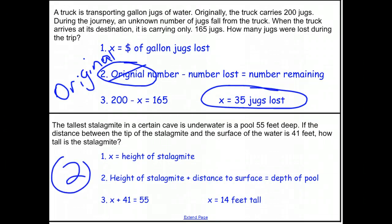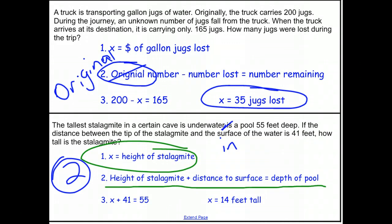For number two, the tallest stalagmite in a certain cave is underwater in a pool 55 feet deep. If the distance between the tip of the stalagmite and the surface of the water is 41 feet, how tall is the stalagmite? Well, we know then in that case that the height of the stalagmite is the unknown. We know that the height of that stalagmite plus the distance to the surface has got to be equal to the depth of the pool, that is, from the bottom to the top. So x, the height, plus the distance to the surface, 41, is equal to 55. Some mental math gives us x equals 14.